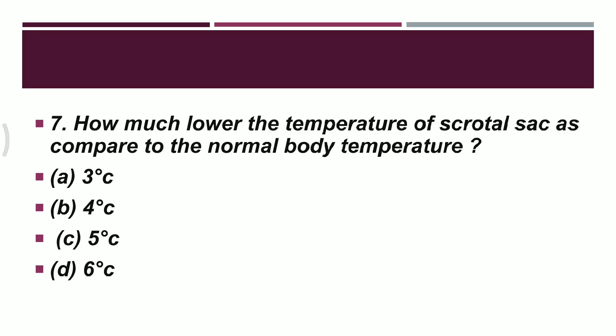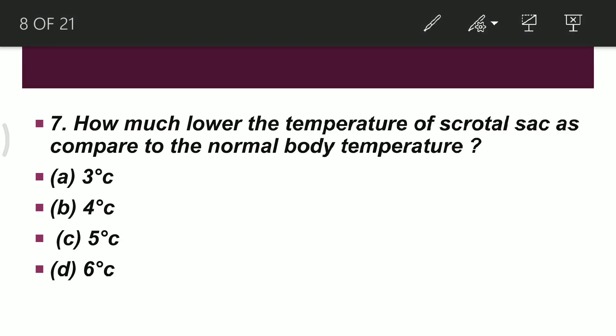Question 7 asks about the temperature of the scrotum compared to body temperature. Option A: 2–3 degrees Celsius lower. Option B: 4 degrees Celsius lower. Option C: 5 degrees Celsius lower. Option D: 6 degrees Celsius lower. The correct option is A — the scrotal temperature is 2–3 degrees lower than normal body temperature.